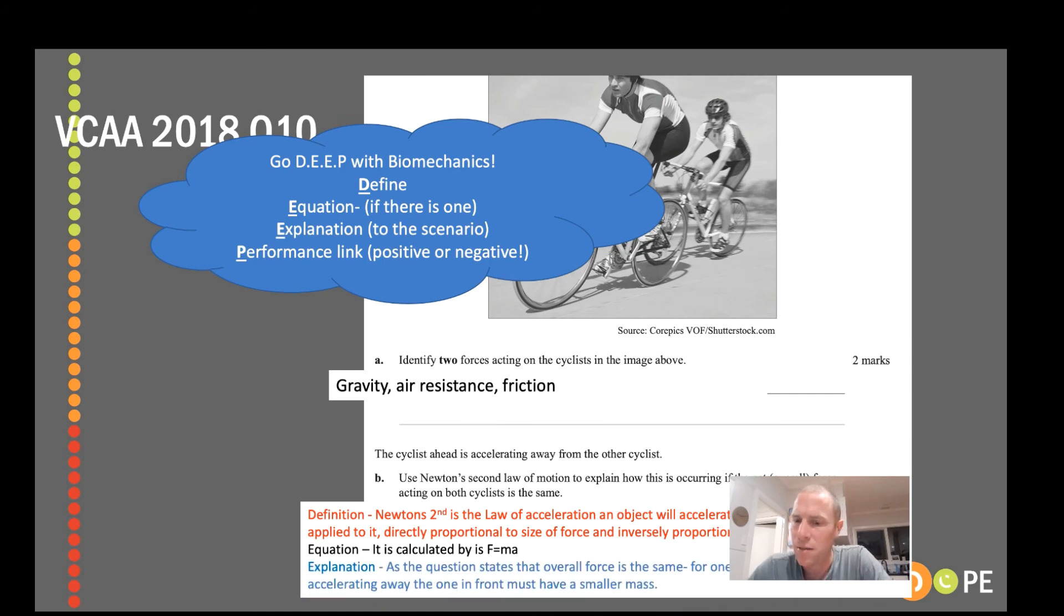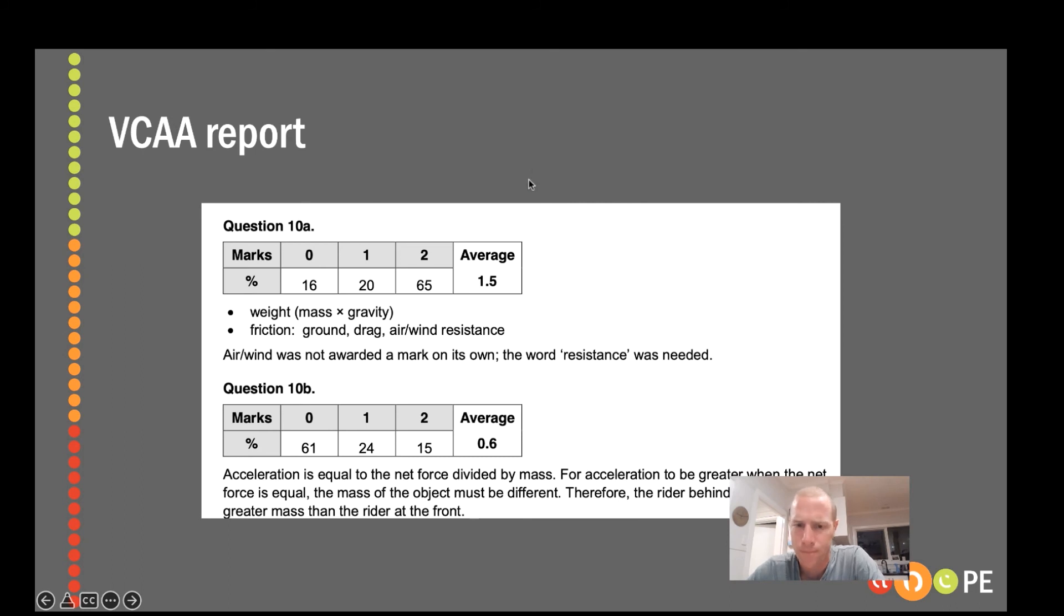Now the explanation is the tricky bit, but in this case force is the same, so if one athlete's accelerating then that one must have that smaller mass. It's not a super performance link here, but just mentioning that that guy is able to more likely win the race would be worth putting in there. Having a look at the VCAR report, only 15% of the state could get two out of two for that question, so it's something not overly well understood, which again means it's likely to come up in a VCAR exam shortly.